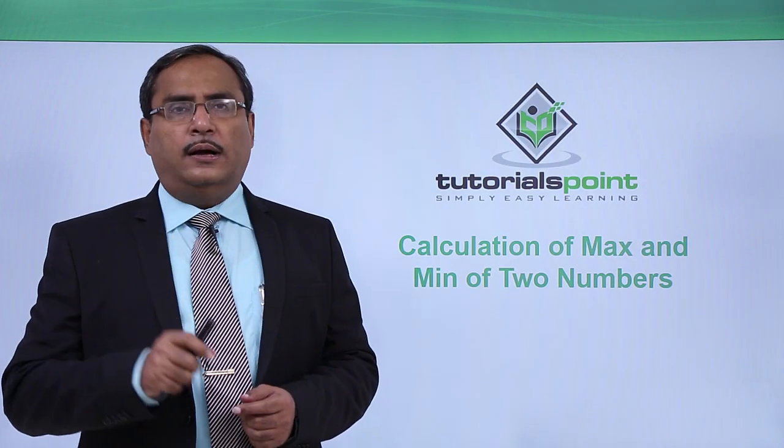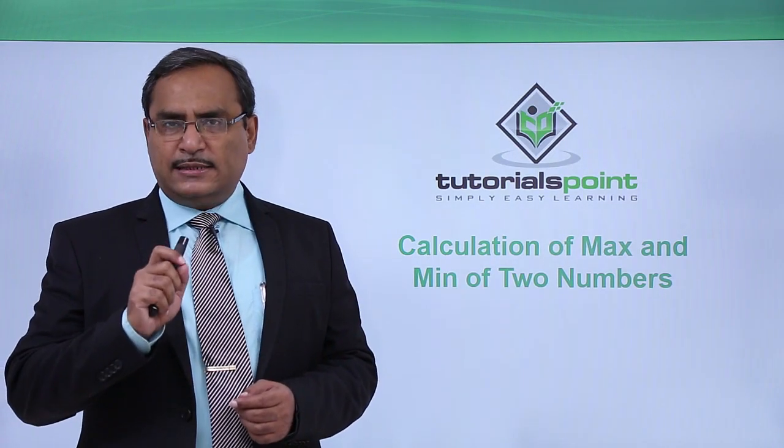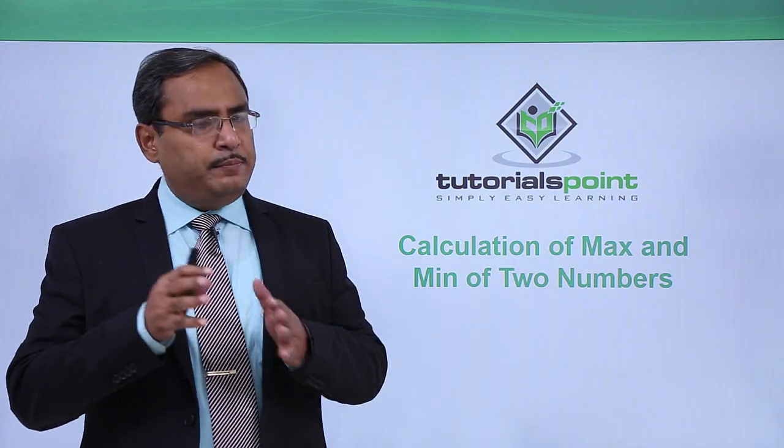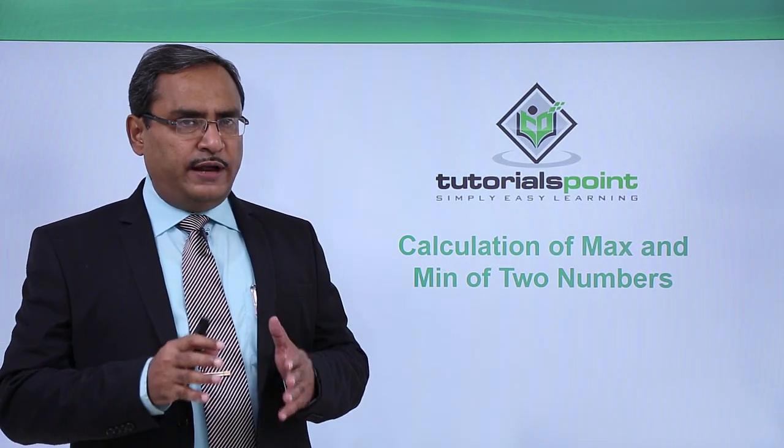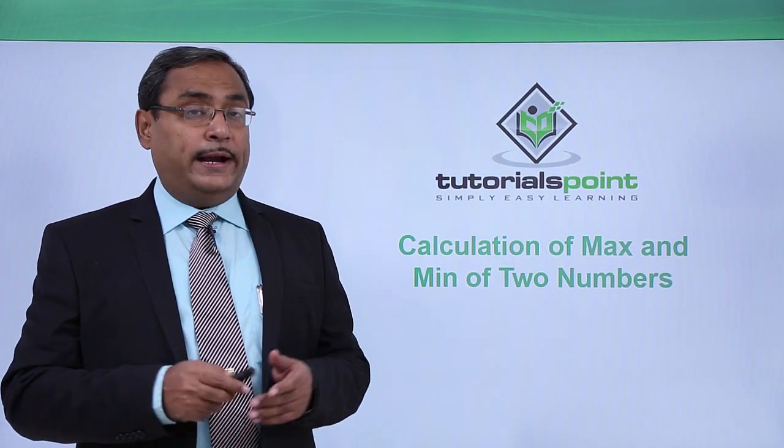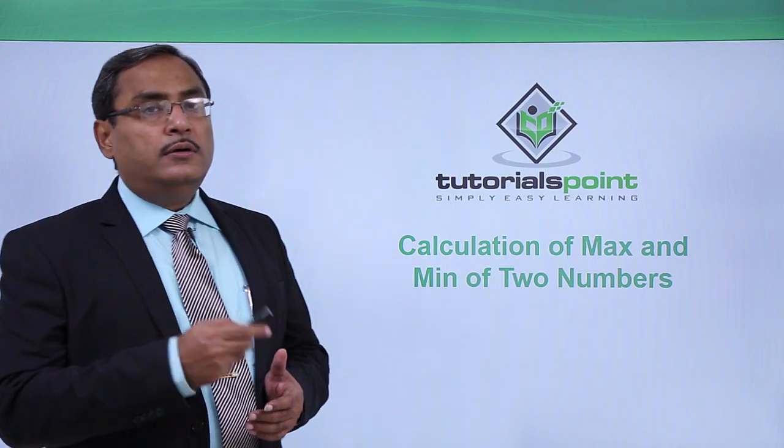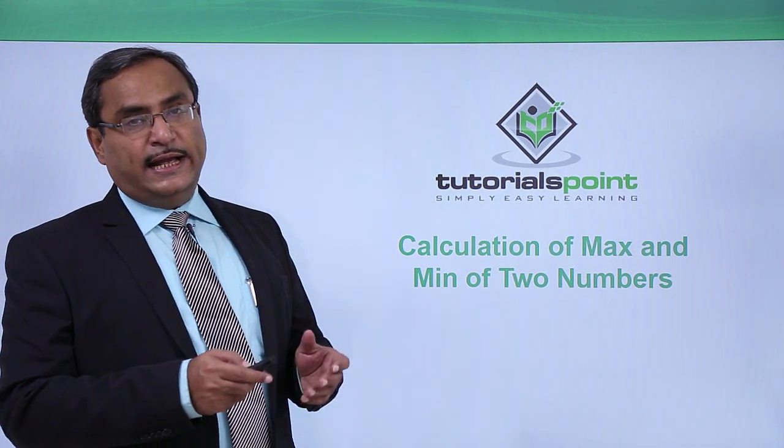Let us write one Prolog program to calculate the max and min, that is maximum and minimum of two given numbers. How to write it? Let us go for further examples and explanations.